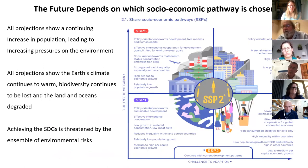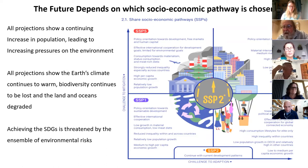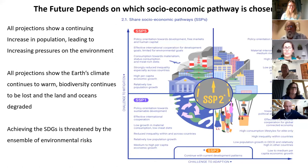Several plausible futures have been considered. SSP1 is a more sustainable world with international cooperation, low growth in material consumption, a shift toward a low-meat diet, reduced inequality, relatively low population growth, but good economic growth. The other three scenarios are far less sustainable. We can examine all of these scenarios and ask what could happen to the climate and to biodiversity in the future.